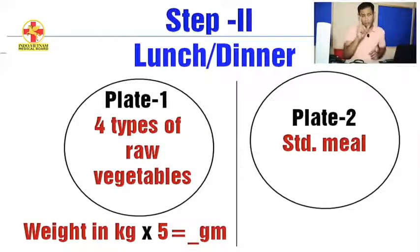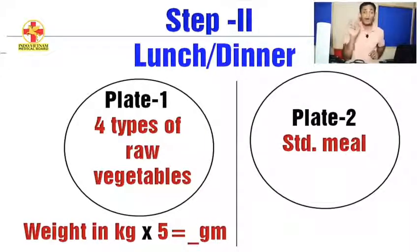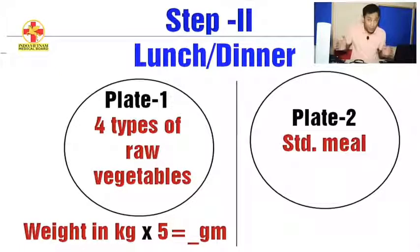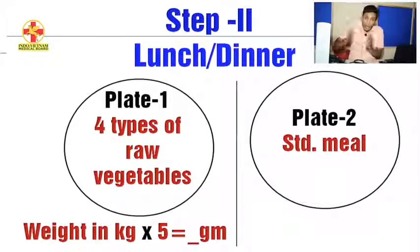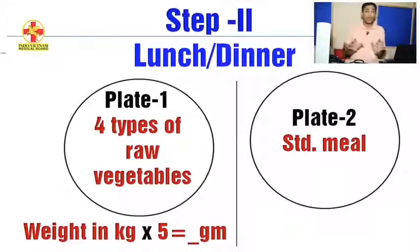Dinner. Dinner has only two rules. The first rule is that your dinner will be finished before sunset. The second rule is that you follow the same as lunch — Plate 1 with 3 to 4 kinds of raw vegetables, about your body weight multiplied by 5 in grams. Then you can eat a vegetarian meal with less salt and less oil, as much as you want.